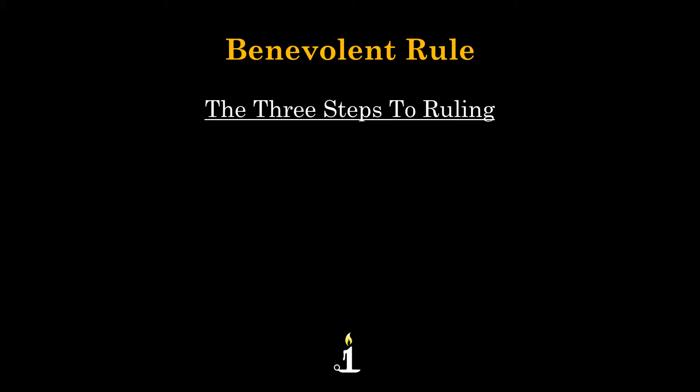The three steps to ruling: Step one — you must create your vision. Notice there's nothing before this. Step one is you create your vision. You ignore everything, everybody, you ignore reality, and you create the vision in your mind as a ruler of what you desire — the ambitious expression you want to bring into the world.